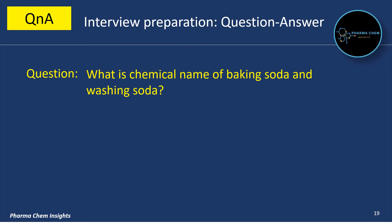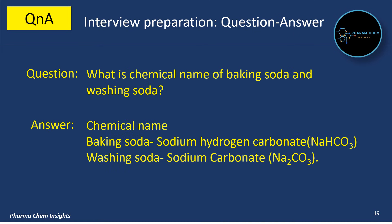What is the chemical name of baking soda and washing soda? The chemical name of baking soda is sodium hydrogen carbonate, i.e., NaHCO3, and washing soda is sodium carbonate, i.e., Na2CO3.